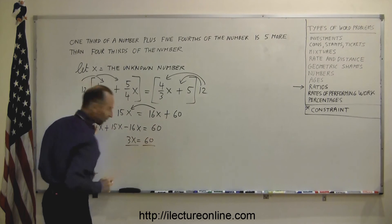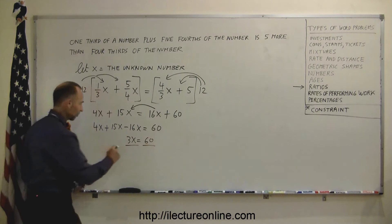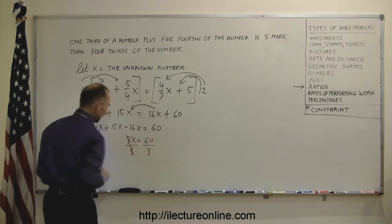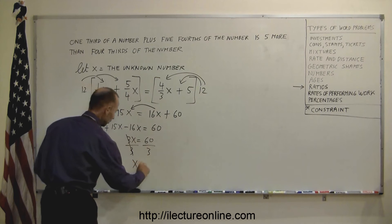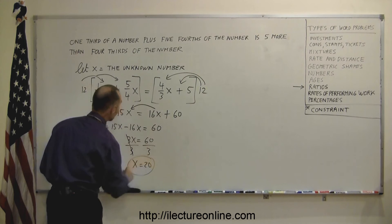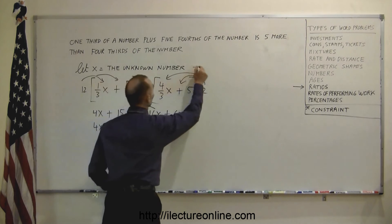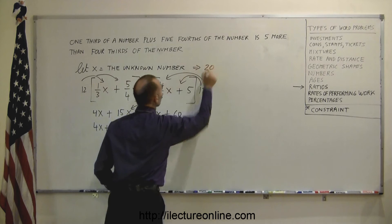Now we divide both sides of the equation by the numerical coefficient in front of the x. That's the 3. That cancels out, so we have x equals 20, which means the unknown number we're looking for is equal to 20.